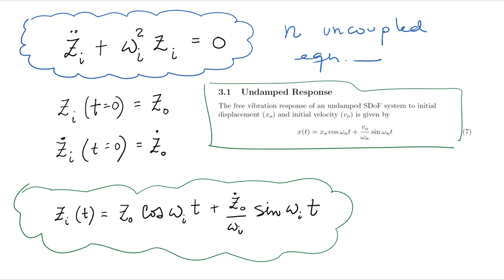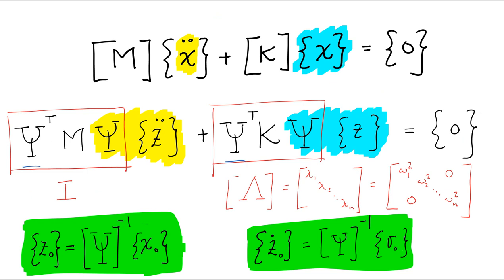Where z naught is the i-th coordinate of the initial condition in modal coordinates, and z naught dot is the i-th coordinate of the initial modal velocities. Both of these come from this equation right here. This is for the velocity, this for the displacement, on the left, and the velocity on the right.